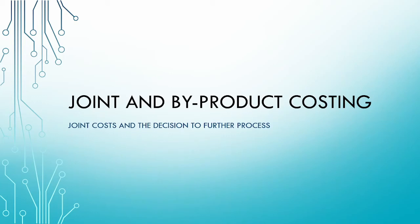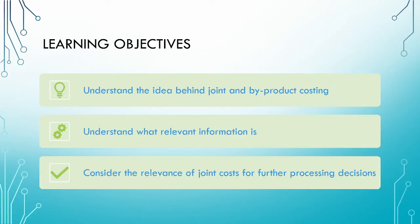Welcome to the final video in our series on joint and byproduct costing. In this video, we move away from the allocation of joint costs to the individual products and focus on the relevance of joint costs for decision-making purposes. Specifically, we'll be focusing on the further processing decision. We will begin by revising the basic idea behind joint and byproduct costing, then look at what relevant information is and consider how it applies to joint costs in further processing decisions.